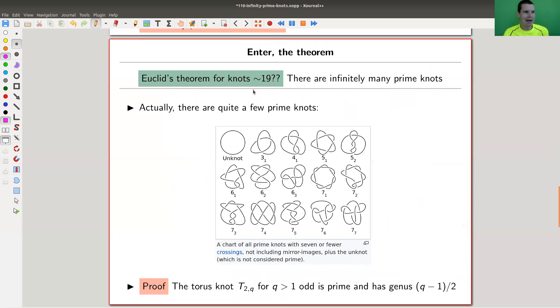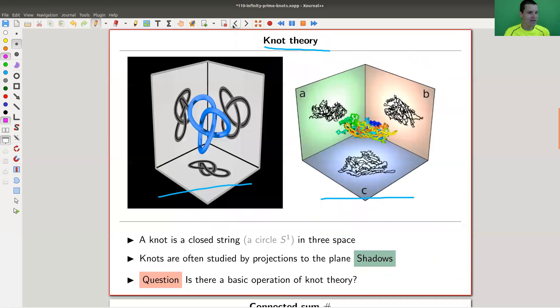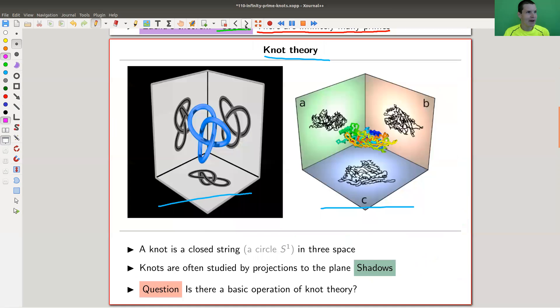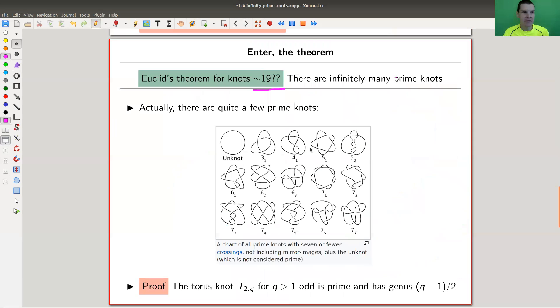So primes and prime knots and prime numbers behave very similar. I wasn't really able to pinpoint it down. It's a bit hard to find, but it's something 19th century, which is not as ancient as Euclid, I guess. But I will still call it Euclid's theorem for knots. And it's exactly the same statement: there are infinitely many prime knots, which is really not easy. And I'll show you the proof in a second. Well, I'll show you two proofs, actually. It's the same as for Euclid's theorem. It really goes in parallel. Euclid's theorem has many proofs. Euclid's theorem for knots has many proofs.